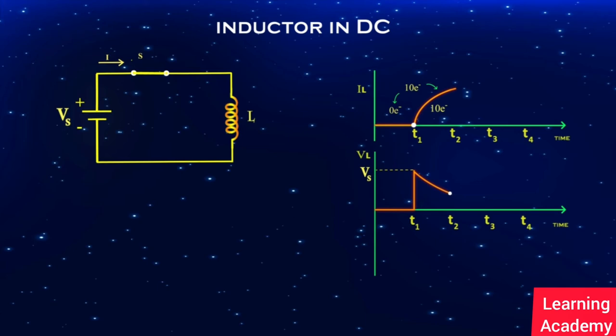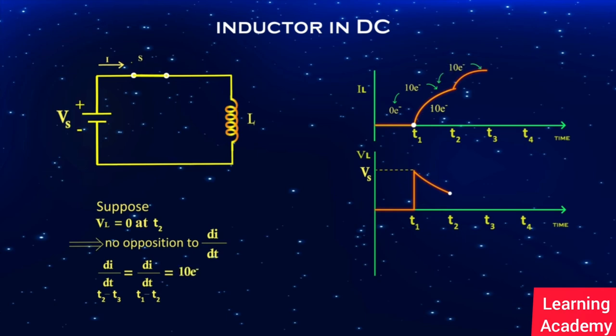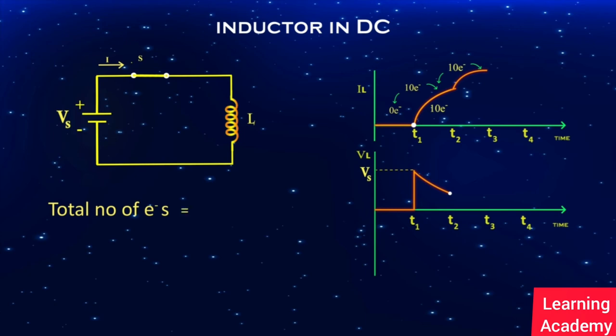As there is induced voltage at time t2, the rate at which current rises decreases. Let us suppose there is no induced voltage at t2. It implies no opposition to change in current. Then the current rise in the time span t2 to t3 should be equal to the current rise in previous time span t1 to t2, that is 10 electrons. So that the total number of electrons flowing in the circuit should be 20. That is, 10 electrons rise in t2 to t3, in addition to 10 electrons in t1 to t2.